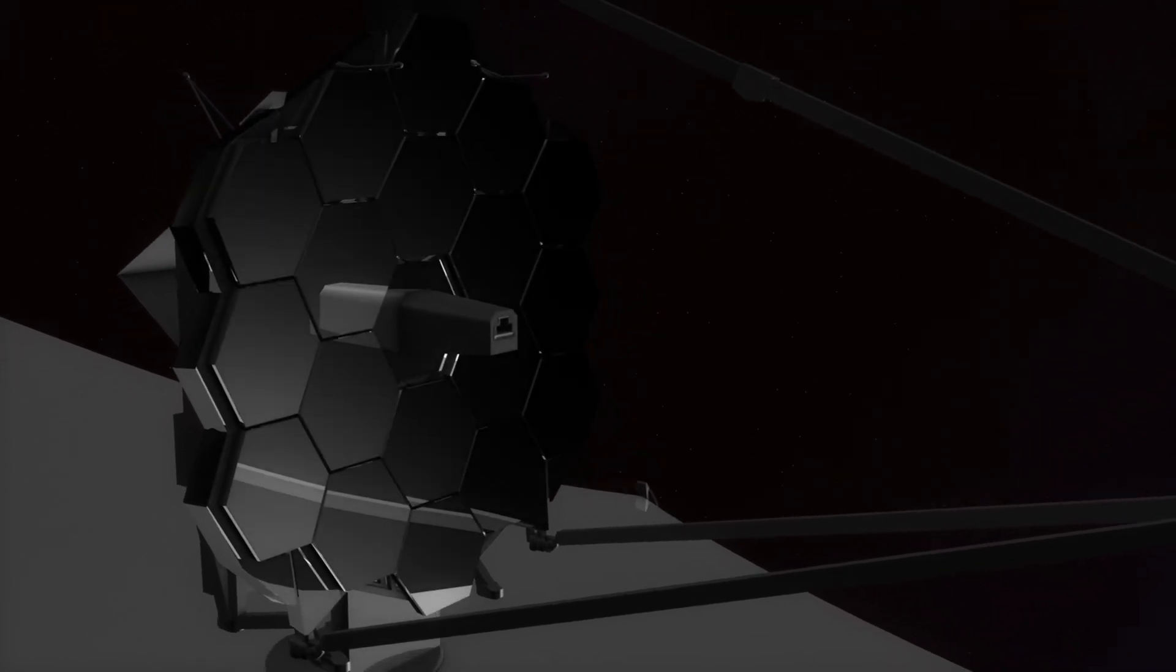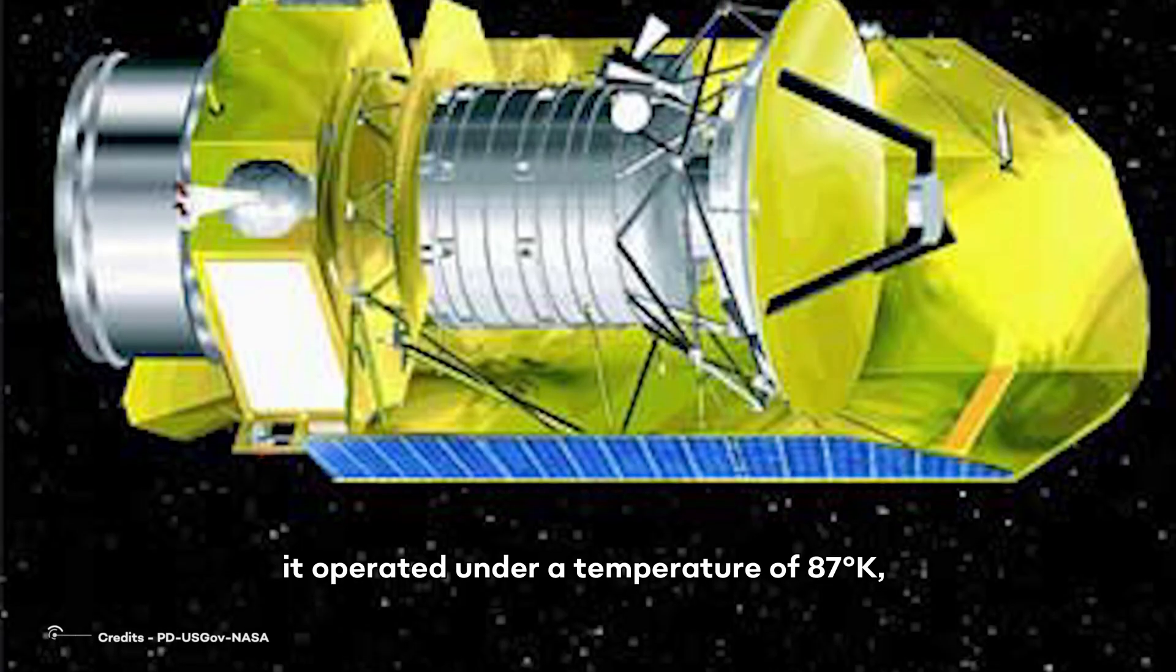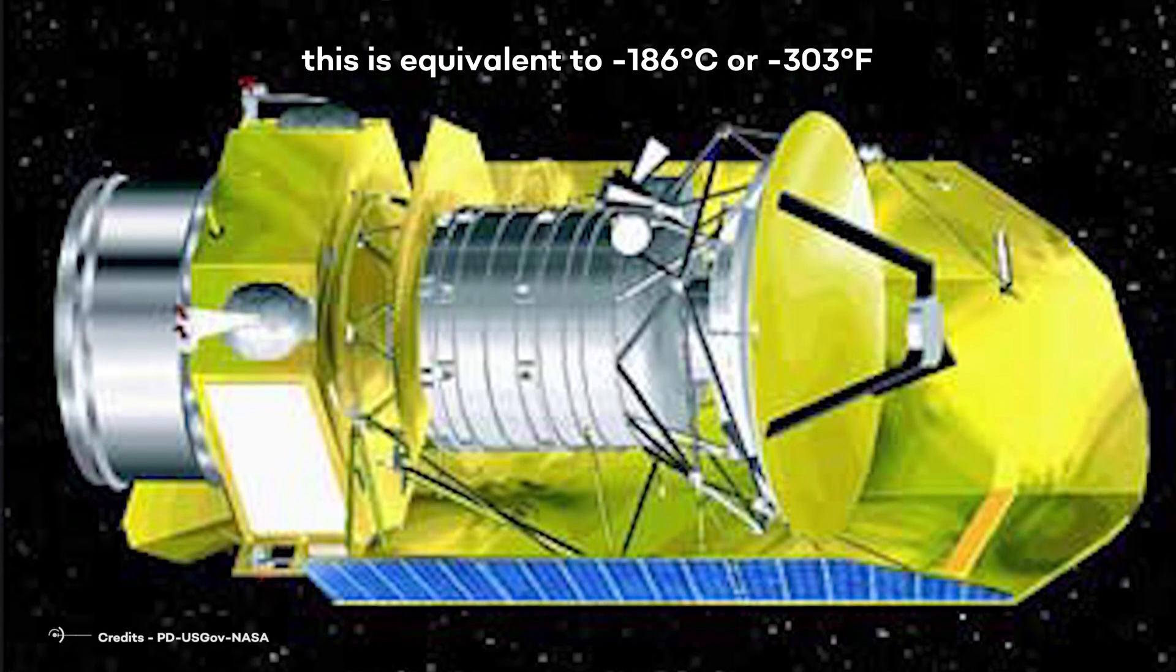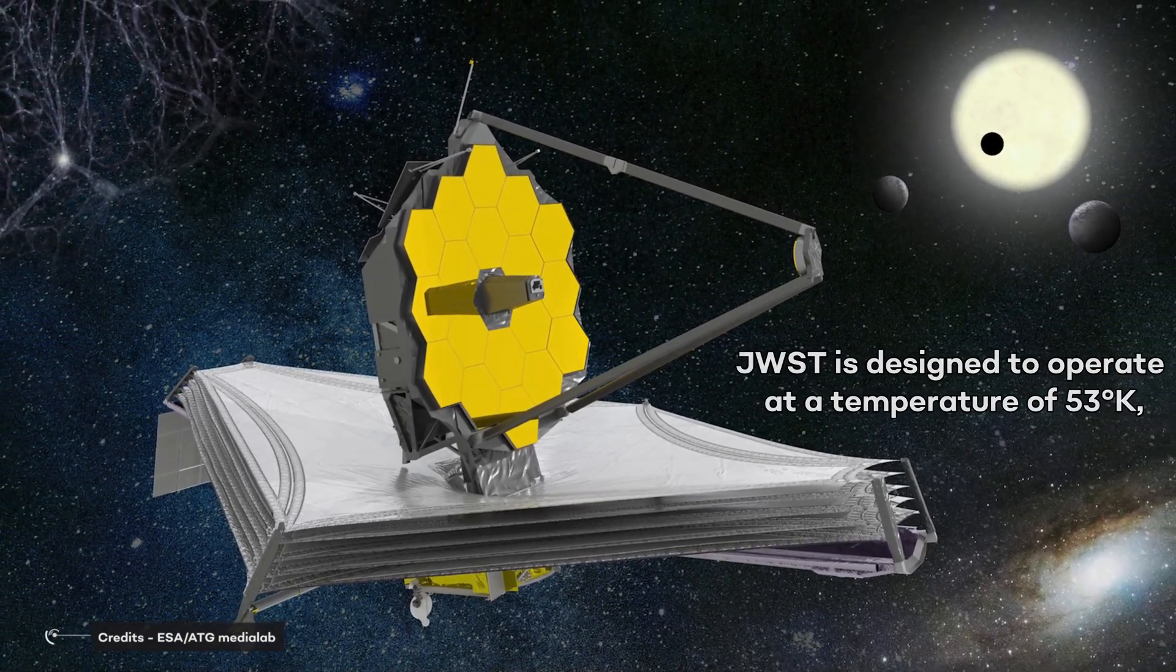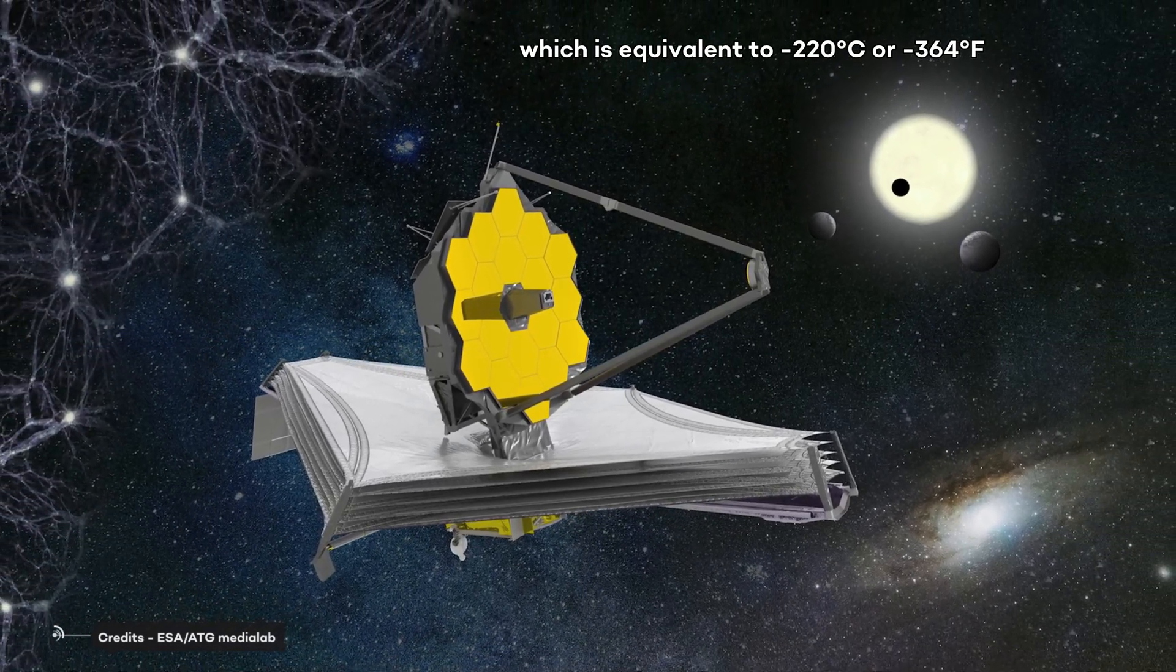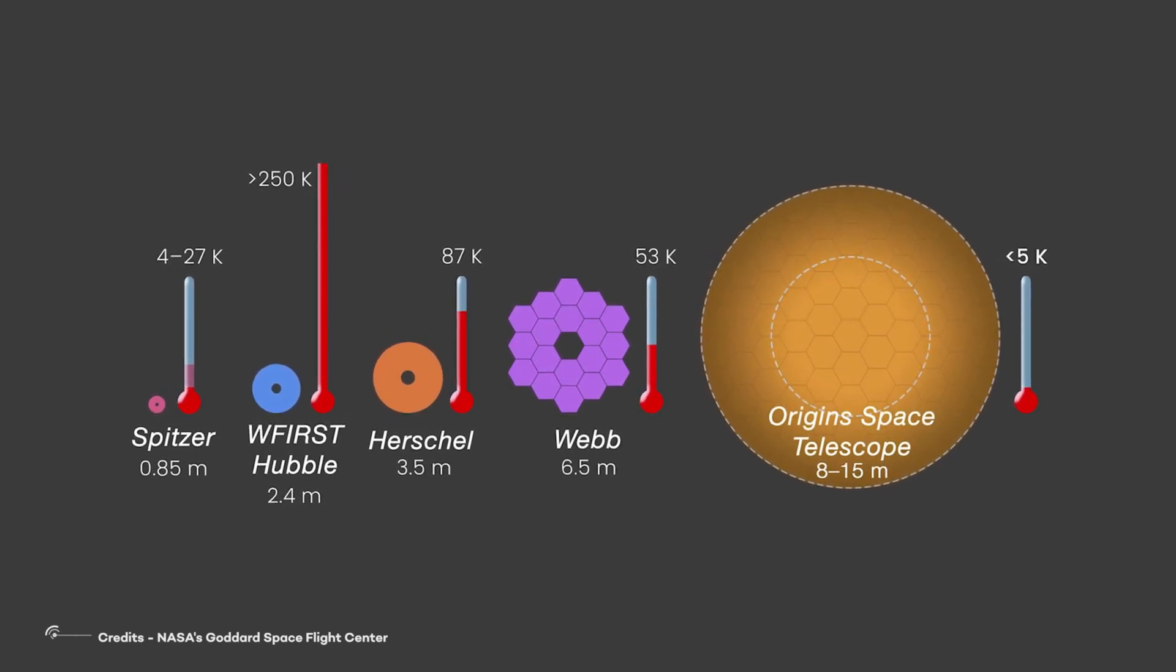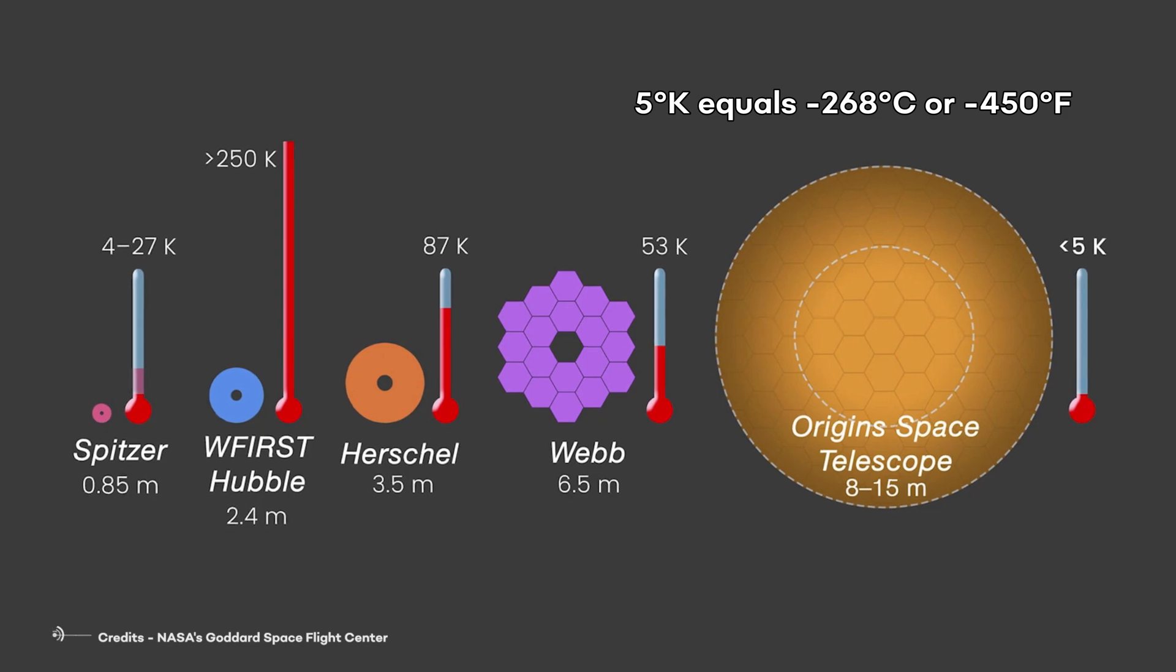Telescopes intended to observe in the infrared light spectrum of the universe are designed to be able to work under extremely low temperatures. The Herschel Space Observatory operated under a temperature of 87 degrees Kelvin, equivalent to minus 186 degrees Celsius or minus 303 degrees Fahrenheit. The James Webb Space Telescope is designed to operate at a temperature of 53 degrees Kelvin, which is equivalent to minus 220 degrees Celsius or minus 364 degrees Fahrenheit. While the new OST telescope is designed to detect photons that are at a temperature of 5 degrees Kelvin. To give you an idea, 5 degrees Kelvin equals minus 268 degrees Celsius or minus 450 degrees Fahrenheit.